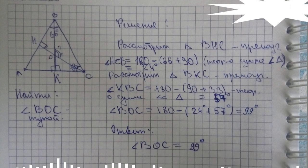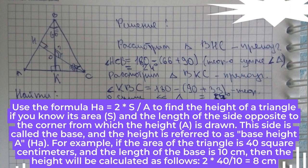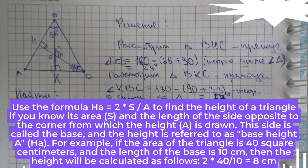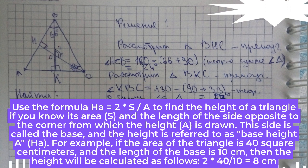Step 1. Use the formula ha = 2 * S / a to find the height of a triangle if you know its area, S, and the length of the side opposite to the corner from which the height is drawn, a. This side is called the base, and the height is referred to as base height ha. For example, if the area of the triangle is 40 square centimeters and the length of the base is 10 centimeters, then the height will be calculated as follows: 2 * 40 / 10 = 8 centimeters.